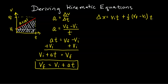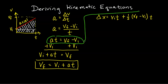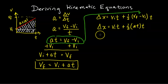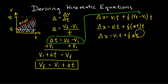Notice that v_final minus v_initial appeared earlier — we can substitute a·t for that. With that substitution we get v_initial times t plus one-half times a·t times t, which multiplies out to v_i·t plus one-half·a·t squared. That is our second kinematic equation.